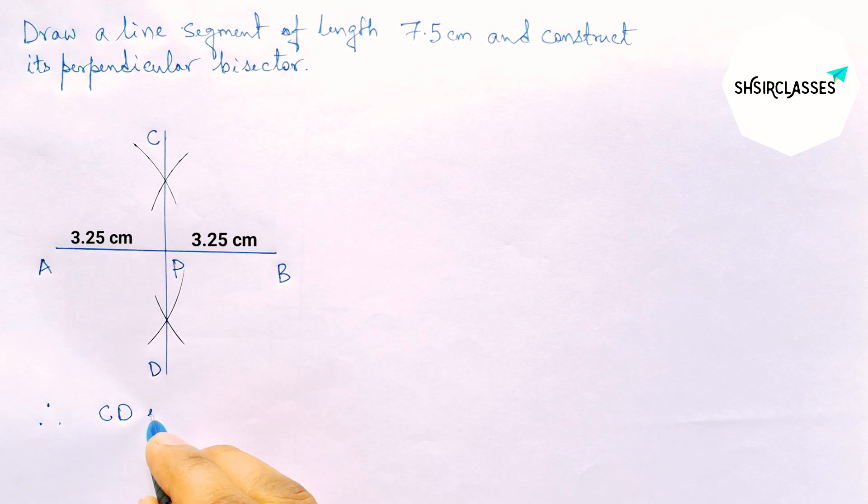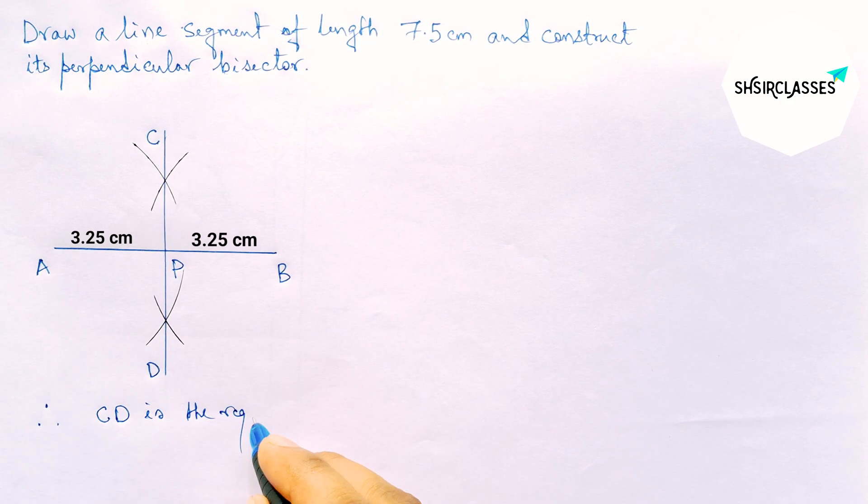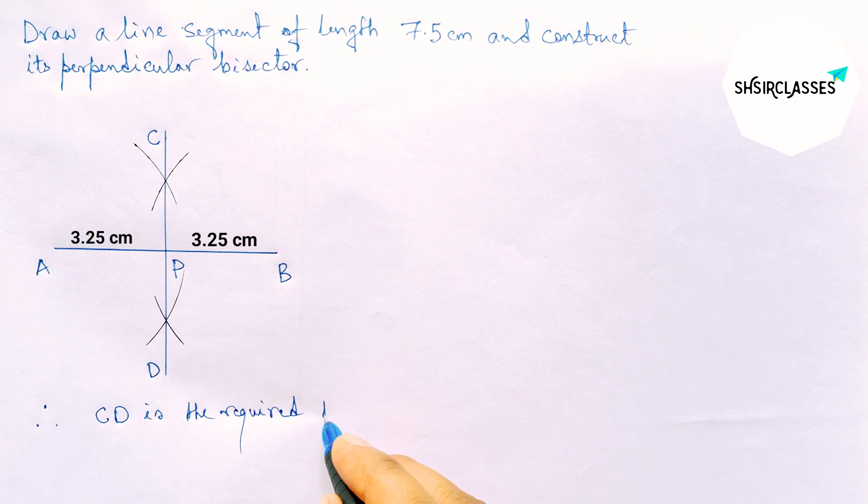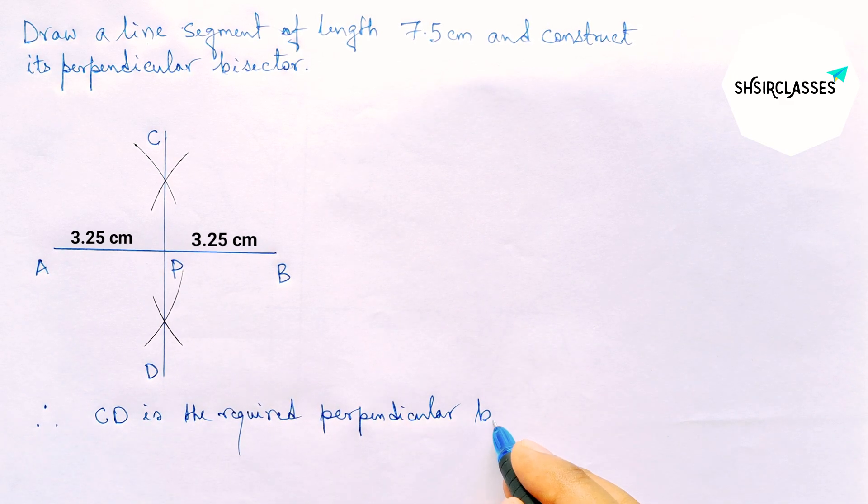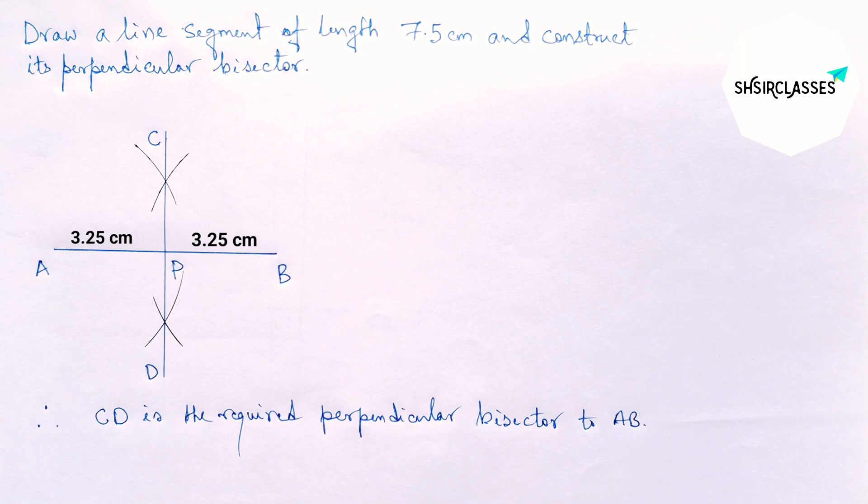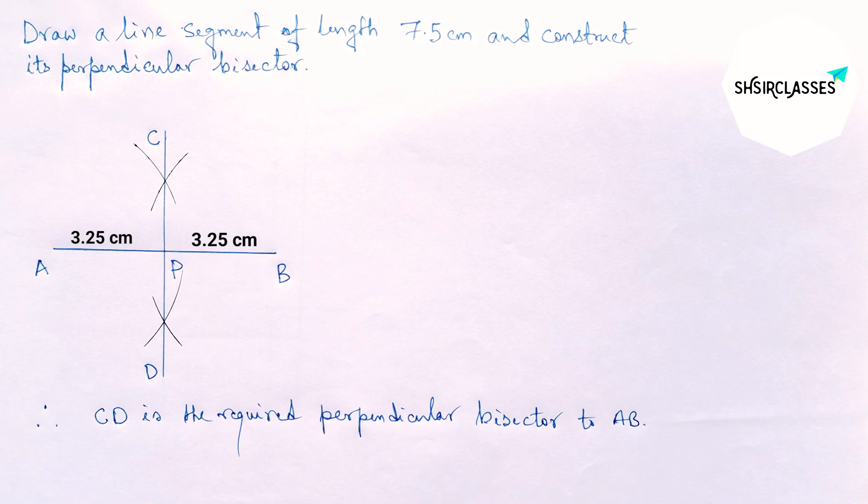CD is the required perpendicular bisector to the line segment AB and by this way you can construct a perpendicular bisector to a given line segment. That's all. Thanks for watching, please share it.